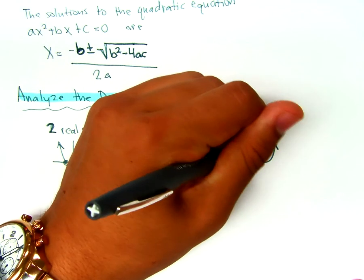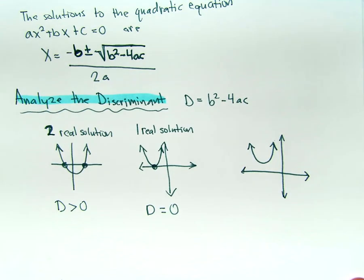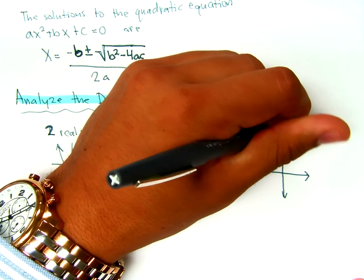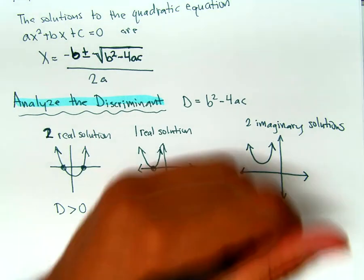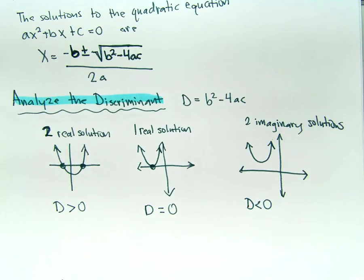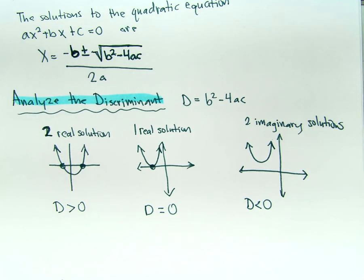The third case is when we have two imaginary solutions — where the parabola never touches the x-axis and doesn't have any zeros or x-intercepts. In this case, our discriminant is less than zero, or negative. If you have a negative under the square root, we should know we're going to get imaginary numbers. So these are the three cases that we'll see. When we analyze the discriminant first, we'll have an idea of what type of answers to expect.